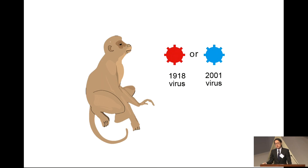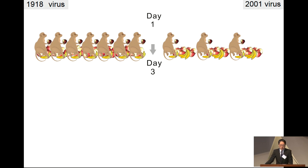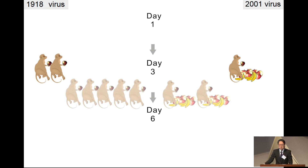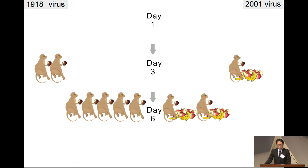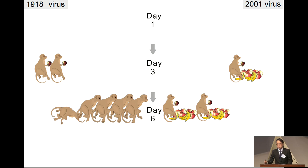We had two viruses — 1918 and 2001 seasonal influenza virus — and compared pathogenicity in non-human primates. Seven animals were infected with the 1918 virus, and three animals were infected with seasonal influenza virus. On day three, all the animals in the 1918 group lost appetite, with no change in the seasonal influenza group. We took some animals for pathological studies. The remaining animals in the 1918 group became sick, and one became really sick — we had to euthanize that animal. No change in the seasonal influenza group.